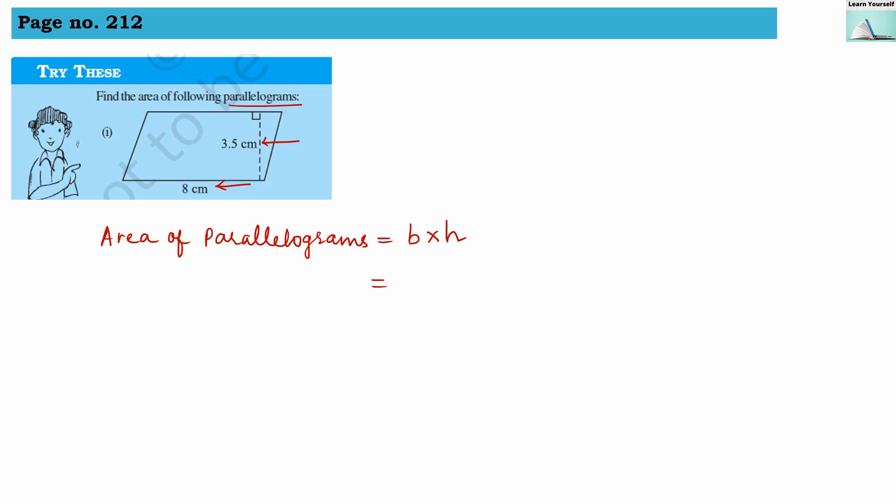So let us multiply them. Base is 8 centimeter and height is 3.5 centimeter. Let us multiply them. First we are avoiding the decimal point and we are multiplying them. So 35 into 8.